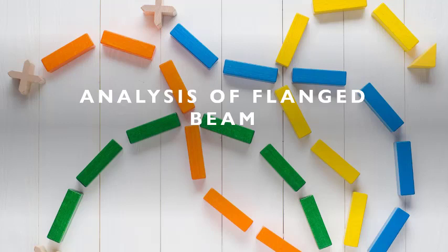In the previous session, we learned the methods to calculate the effective flange width for T-beam and L-beam. For an analysis problem for a given section, we must calculate the neutral axis depth first. Once we know the neutral axis depth, we can compute the ultimate moment of resistance for the given section.